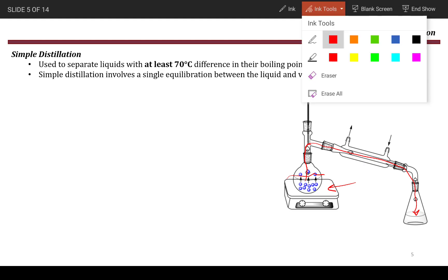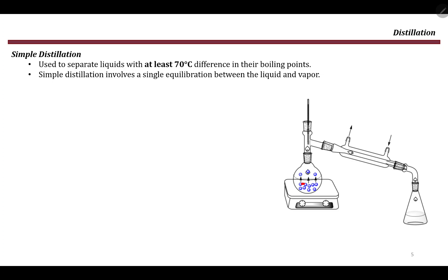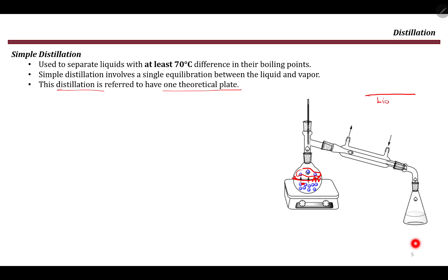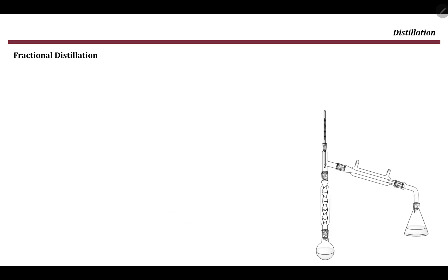Simple distillation is known to involve only a single equilibration between the liquid and vapor phases. The liquid molecules evaporate and the gas molecules are present, giving only one equilibrium between the surface of the liquid and the gas state. This is why simple distillation is referred to as having one theoretical plate — the equilibrium between liquid and gas takes place at only one position.